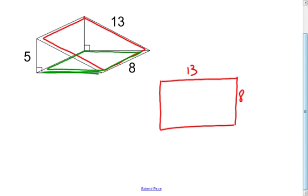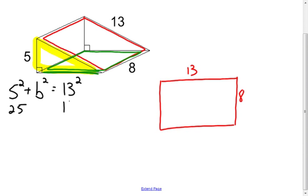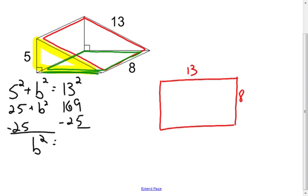I'm going to have to figure out the missing length. This is a right triangle, so I know the hypotenuse is 13 and one of the legs is 5. I can use the Pythagorean theorem: a² + b² = c². That gives 25 + b² = 169. Subtracting 25 from both sides: b² = 144. Taking the square root of both sides, b equals 12. Since we're dealing with side lengths, we don't worry about the negative. So that missing side is 12.